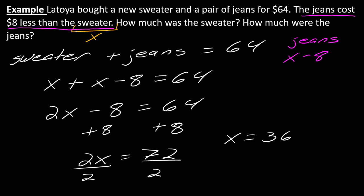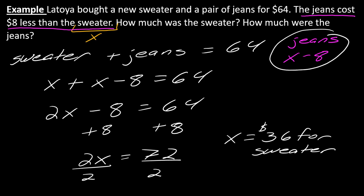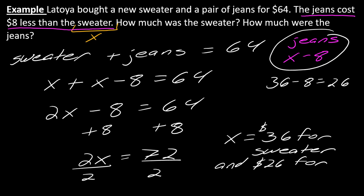You have to be careful when you get to the end of the problem — it asks how much was the sweater and how much were the jeans. The sweater was represented by X, so it's $36 for the sweater. For the jeans, remember that was X minus 8, so 36 minus 8 comes out to 28 — wait, that's $26 for the jeans.